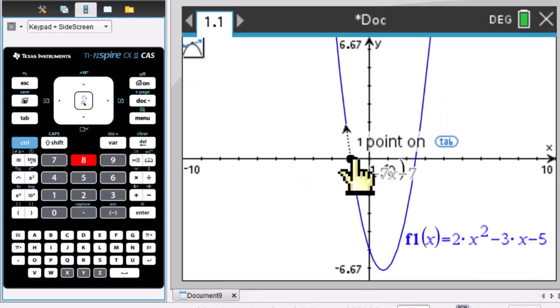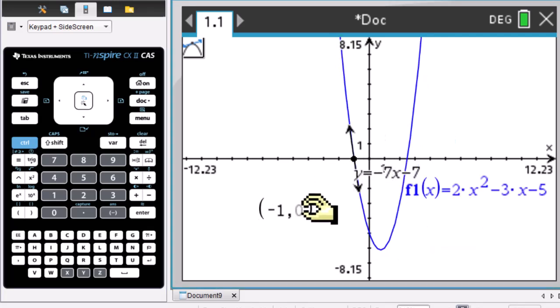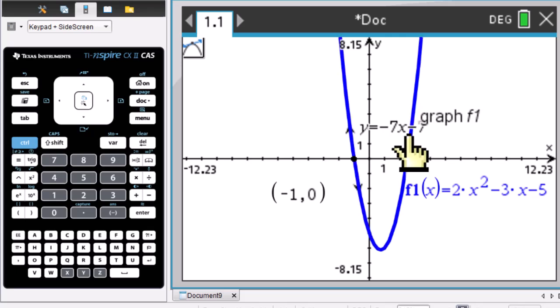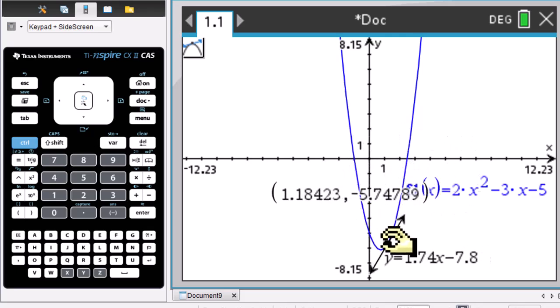Then click on this point. Then you got this equation of tangent line y equals negative 7x minus 7. You can move this point. Then your tangent equation will change.